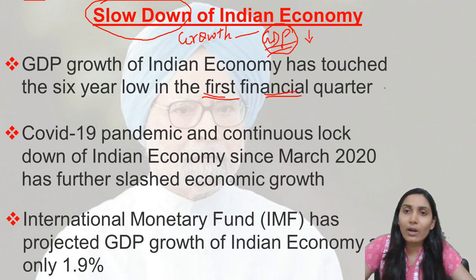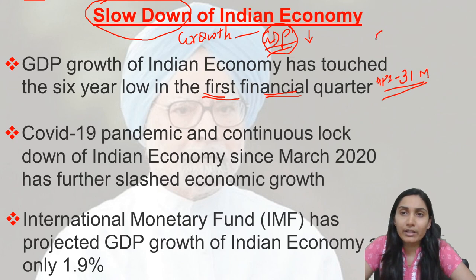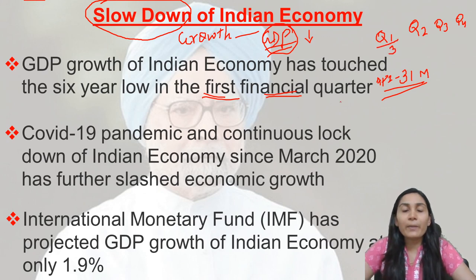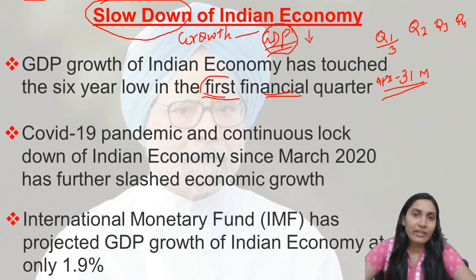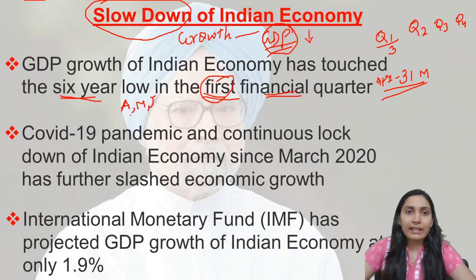Every financial year in India begins on April 1st and ends on March 31st. Each financial year is divided into four quarters — Q1, Q2, Q3, and Q4 — each consisting of three months. The first quarter covers April, May, and June. In the first quarter of the present financial year, we witnessed the GDP growth at a 6-year low.